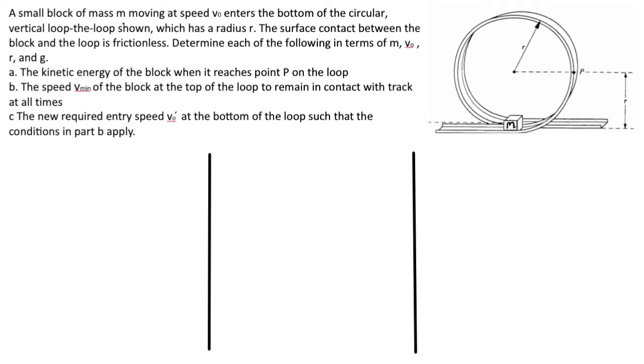A small block of mass m, moving at speed v0, enters the bottom of the circular vertical loop-de-loop shown, which has a radius r. The surface contact between the block and the loop is frictionless, a major point. Determine each of the following in terms of m, v0, r, and g.